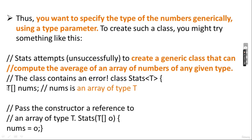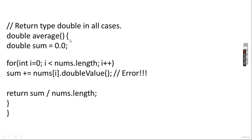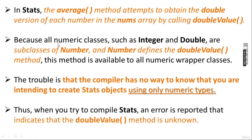T is the type whose array we are creating, and nums is the name of that array. The constructor takes a reference to an array of type T. This is an unsuccessful attempt. The average method declares double sum = 0.0, then tries sum += nums[i].doubleValue(), and returns sum divided by nums.length. This will give a compiler error.